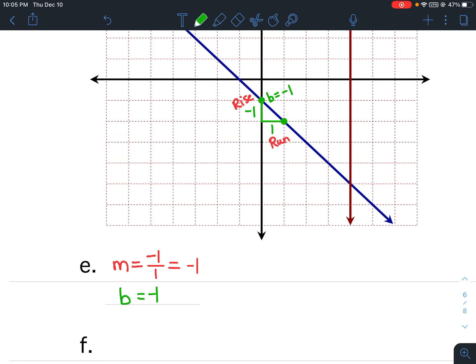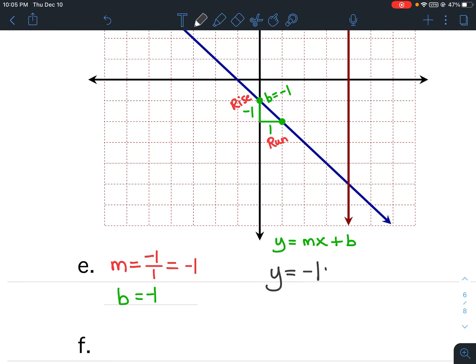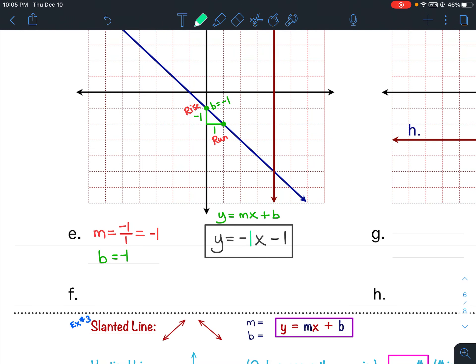So, my equation is going to be y equals... Now, you can put negative 1x minus 1, and that could be your final answer. And I would not mark that wrong. But, technically, you don't need to put that 1 for the slope. So, what I'm going to do is I'm going to put it in a lighter color. So, you could either have the answer y equals negative x minus 1, or negative 1x minus 1. Either way, it is correct.